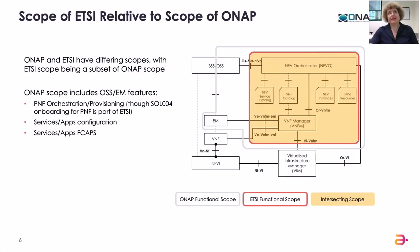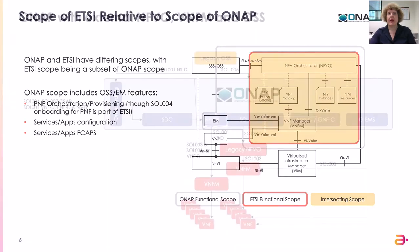Regarding ETSI NFV scope related to the scope of ONAP, that hasn't changed much. They have slightly different scopes, with ETSI scope being a subset of ONAP scope. On this picture we can see what is the subset of ETSI scope — marked in yellow — and what is the intersection scope being implemented by ONAP. ONAP scope includes OSS features such as PNF orchestration, service and application configuration, and service application FCAPS.